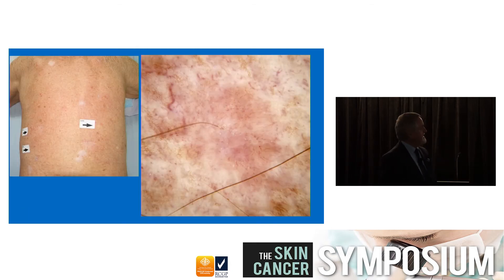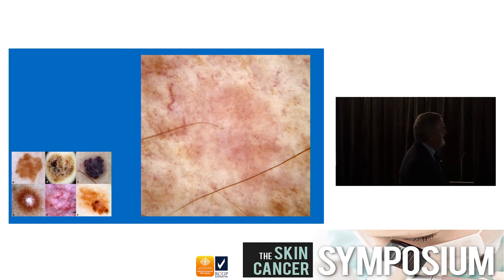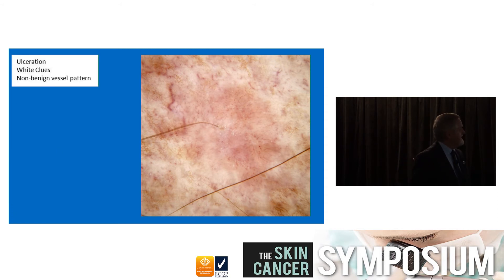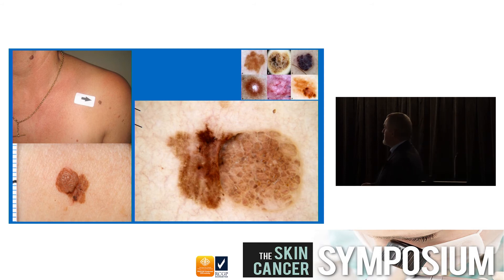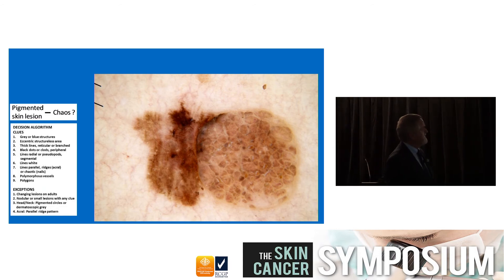You look at a lesion, you don't recognize it as one of those five benign things, so you put it through a method - and whether you get the diagnosis right or not doesn't matter, you're going to cut it out. This morning's case showed dot vessels and linear vessels, and it turned out to be an invasive melanoma. Here's another interesting case - it doesn't fit the pattern of those five benign things, so we pull it through pattern analysis using the pigmented method: chaotic, with clues to malignancy.